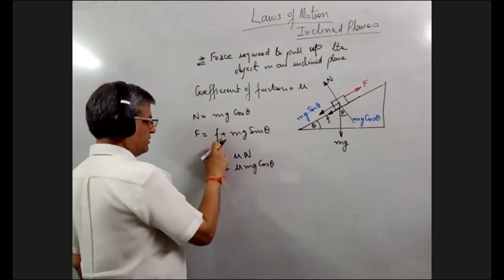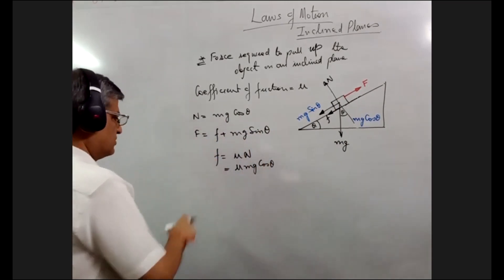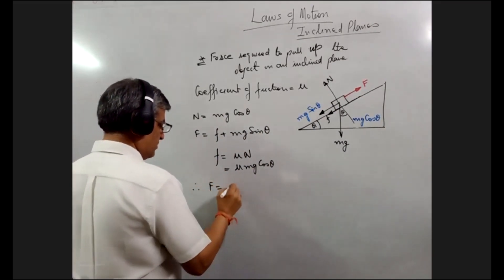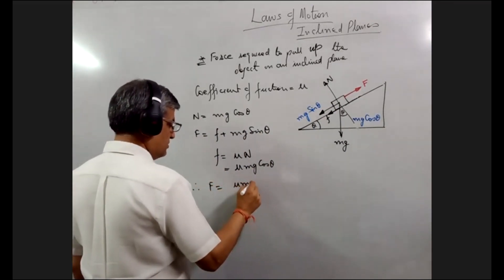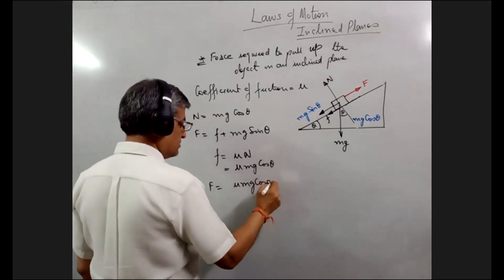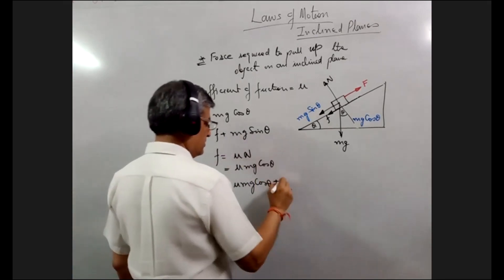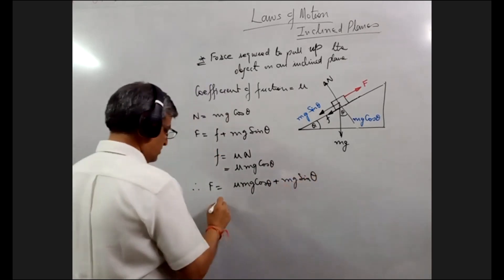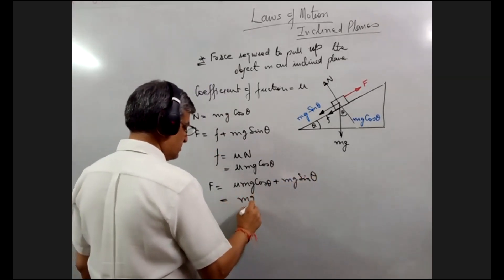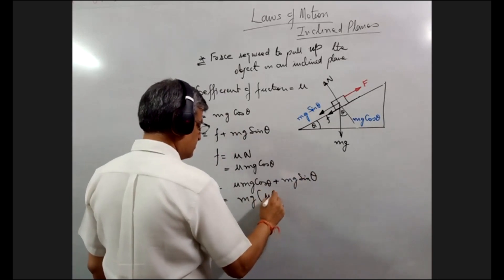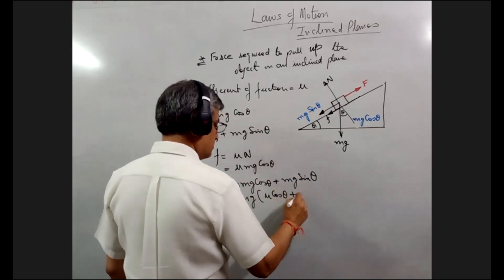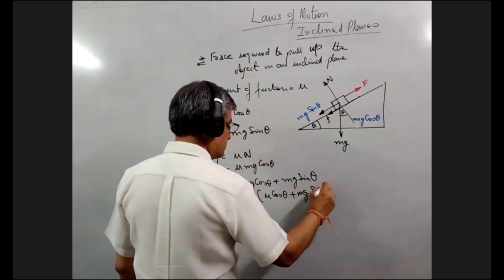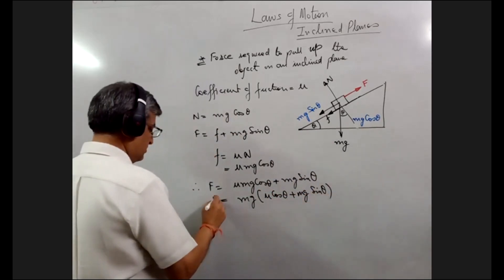We substitute this value of F to find the required force. Therefore, force is given by mu mg cos theta plus mg sin theta. Taking mg common, we get mg times mu cos theta plus sin theta. That is all.